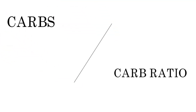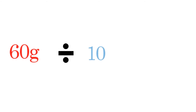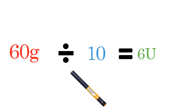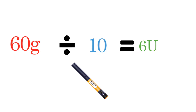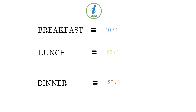Let's presume that you are about to eat a meal that has 60 grams of carbohydrates, and you have a carb ratio of 10. The carb ratio of 10 is divided into the 60 grams of carbohydrates: 60 divided by 10 means that you need to inject 6 units of bolus insulin.